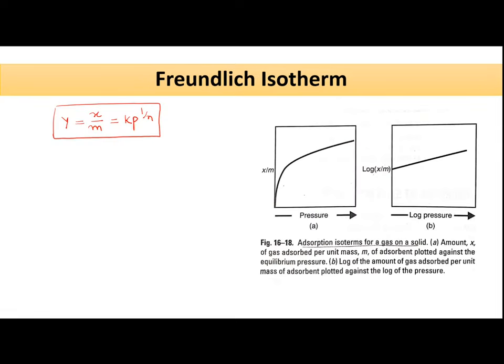The first isotherm was given by Freundlich and is called the Freundlich isotherm. According to Freundlich, the relationship between how much gas is getting adsorbed and the pressure is: y = x/m = k·p^(1/n), where y is the mass of the gas adsorbed per unit mass (x/m); x is the mass of the gas adsorbed; k and n are constants; and p is the pressure of the gas. If you plot x/m versus p, you will get the Freundlich isotherm curve.